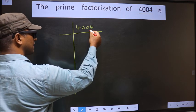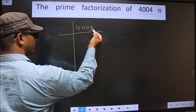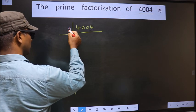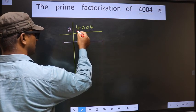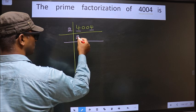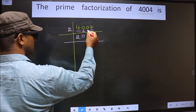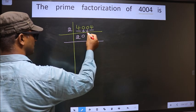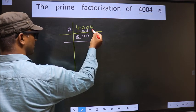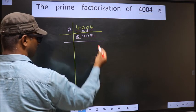For this number, the last digit is 4, which is even. So we take 2 here. The first number is 4 — when do we get 4 in the 2 table? 2 times 2 is 4. The next digits, 0 and 0, come down as they are. Next number is 4 — when do we get 4 in the 2 table? 2 times 2 is 4. So 4004 ÷ 2 = 2002.